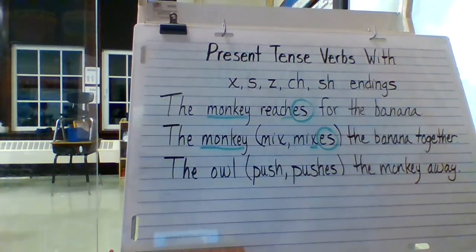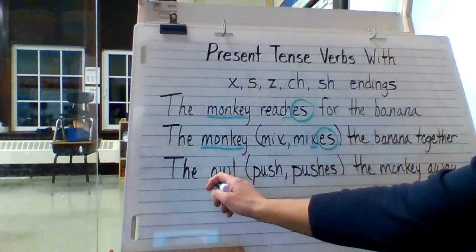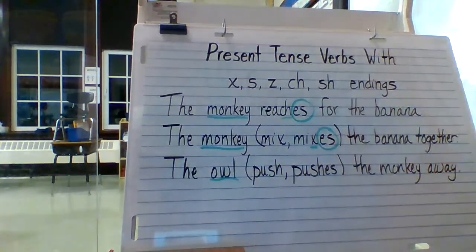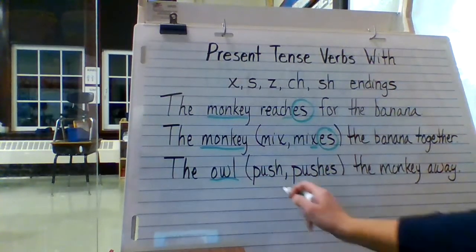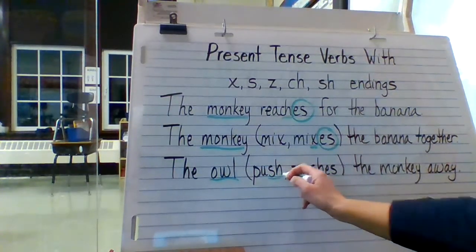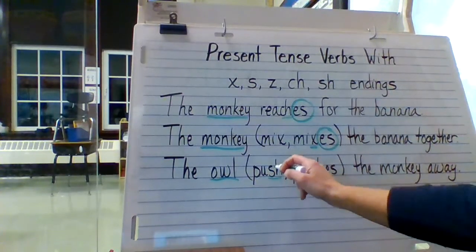Let's look at one more example. The owl push or pushes the monkey away. So now our subject again is one — it's singular — and our verb is push. Now push ends in SH. So I know I want an S on the end of my verb, but since it ends in SH,